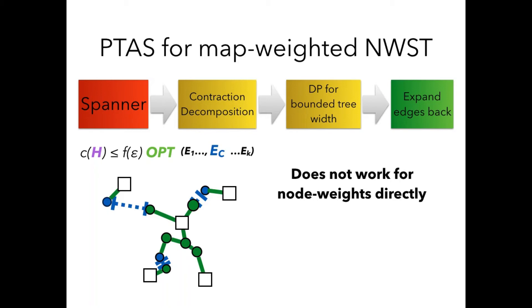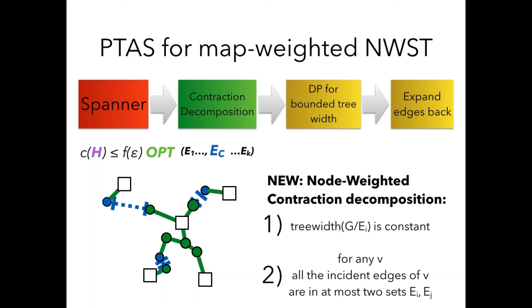This will not work directly for node weights. One first idea would be to set the cost of edges to the sum of cost of nodes, of the endpoints, and do everything as in the framework. However, this will not work due to the cost explosion, basically due to the high degree vertices. We have to derive something new.